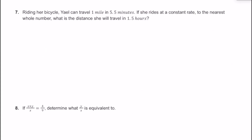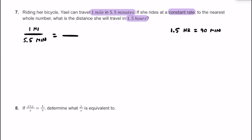Let's take a look at number 7. Riding her bicycle, Yao can travel one mile in 5.5 minutes. She's going at a constant rate, so we're dealing with a proportion. To the nearest whole number, what is the distance she'll travel in 1.5 hours? For 1.5 hours, let's convert to minutes: 1 hour is 60 minutes, so 1.5 hours equals 90 minutes. We set up a proportion with time on the bottom.